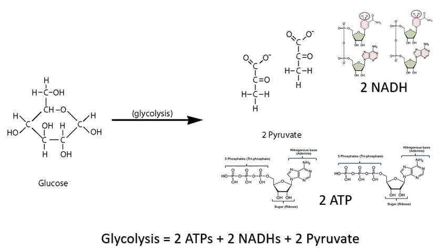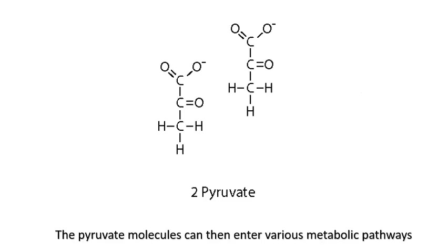In summary, the glucose molecule through the process of glycolysis will yield 2 molecules of ATP, 2 molecules of NADH, and 2 molecules of pyruvate.